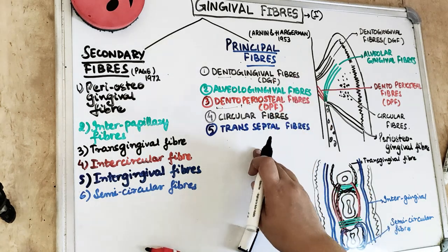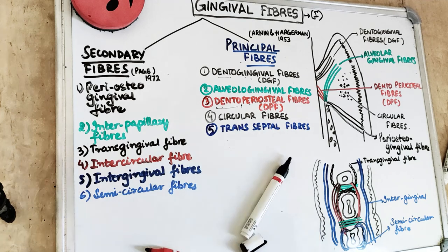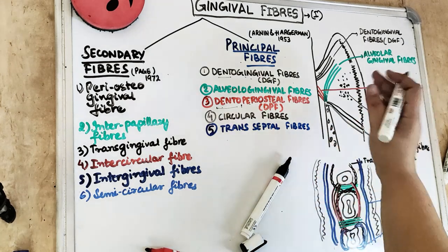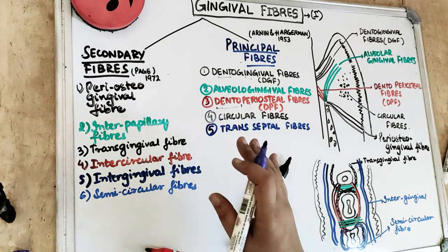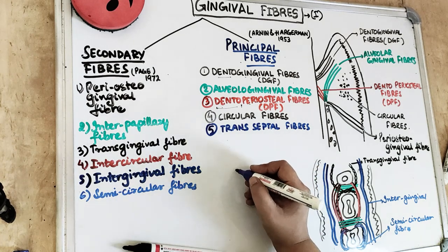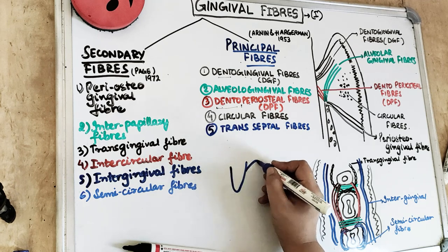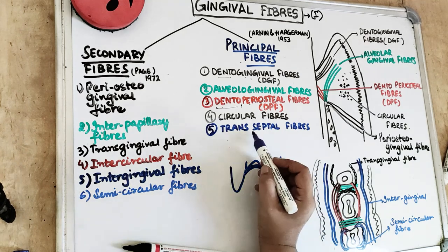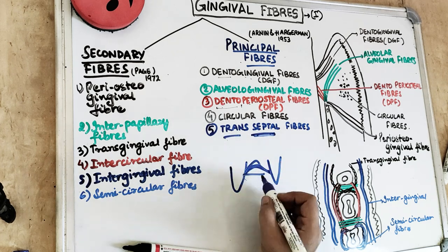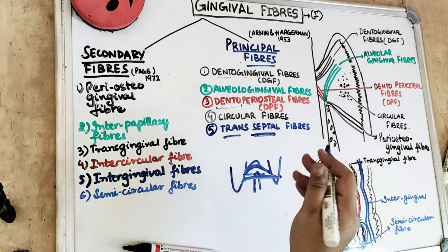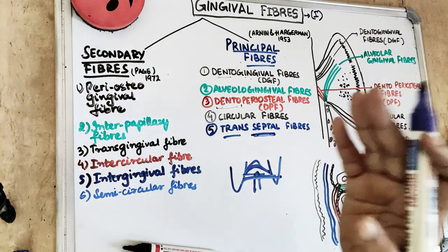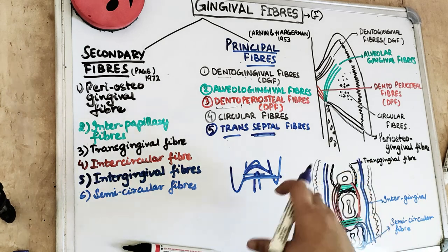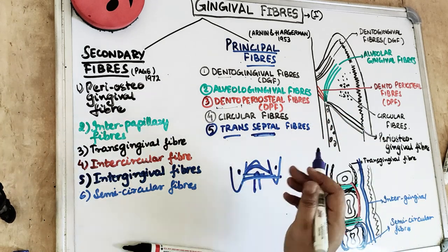The last principal fiber is the transseptal fiber. These run across the interdental septum from one adjacent tooth to another. Breaking the term: septum means interdental bone, so these fibers cross the interdental bone as well. They run across the interdental septum and are embedded in the cementum of the adjacent tooth — going interproximally from one tooth to another and maintaining tooth-to-tooth contact.